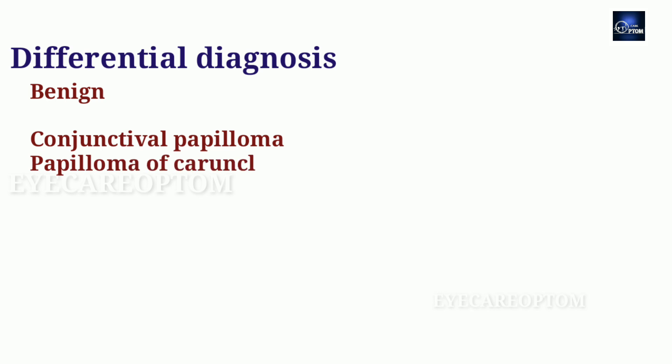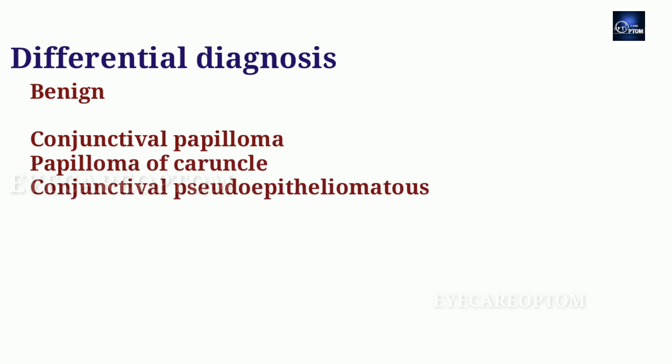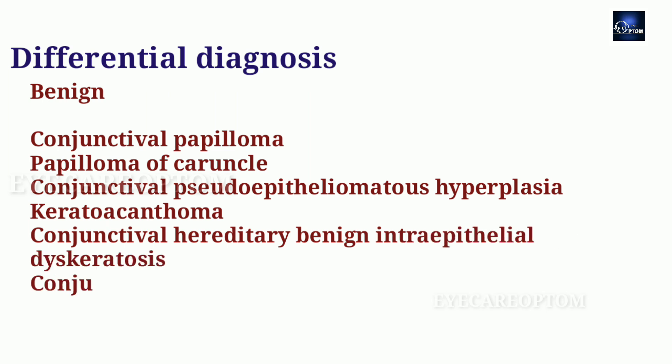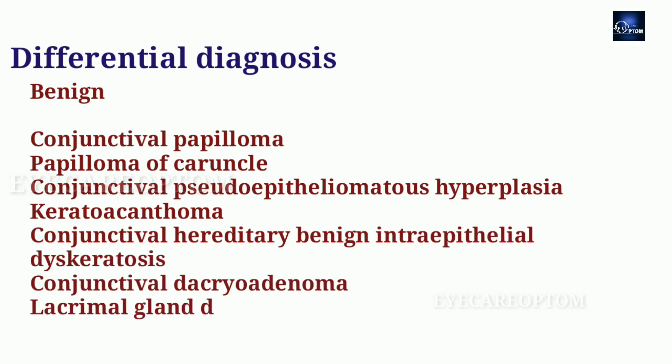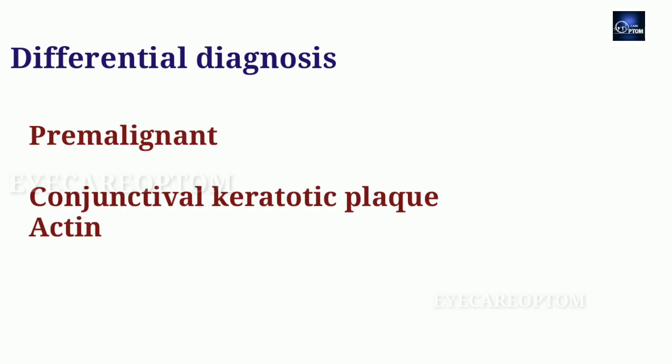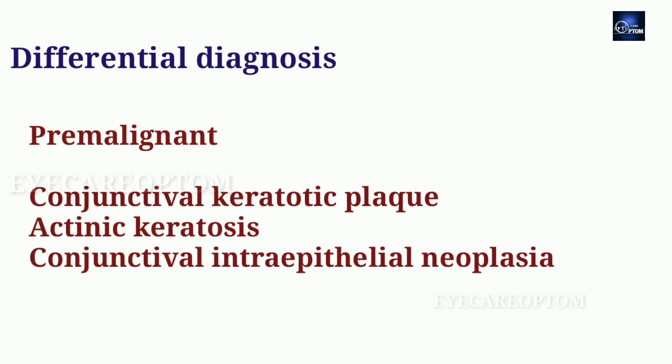Differential diagnosis of this condition is divided into two categories: benign and pre-malignant. Benign conditions include conjunctival papilloma, papilloma of caruncle, conjunctival pseudoepitheliomatous hyperplasia, keratoacanthoma, conjunctival hereditary benign intraepithelial dyskeratosis, conjunctival dacryoadenoma, lacrimal gland dacryops, and epithelial inclusion cyst. Pre-malignant conditions include actinic keratosis and conjunctival intraepithelial neoplasia.